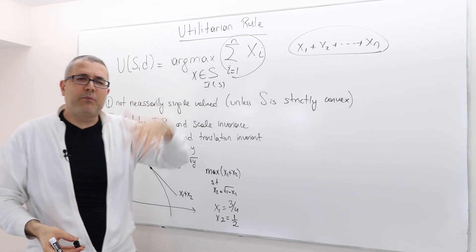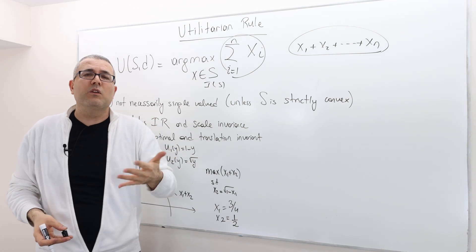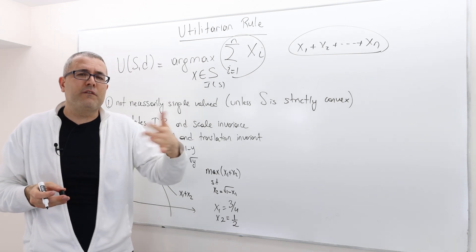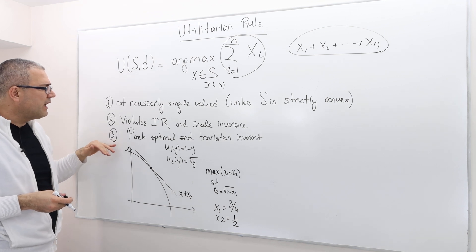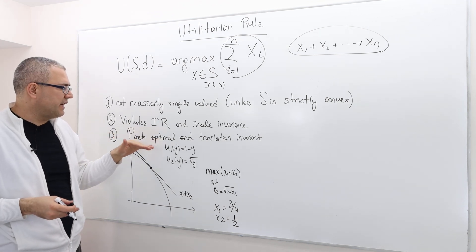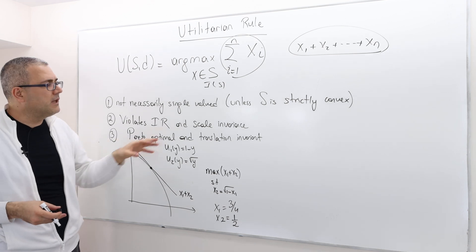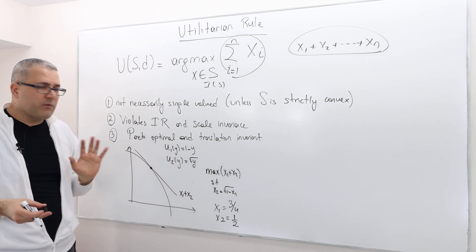And it also violates scale invariance. If we scale up or down the preference utilities, the outcome will differ. But that's the entire point, right? Because the utilities are very important according to utilitarian rule. However, it satisfies Pareto optimality. So the solutions are always Pareto optimal. And this rule satisfies translation invariance.